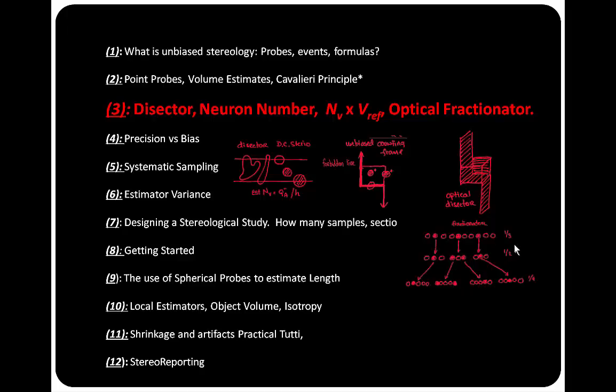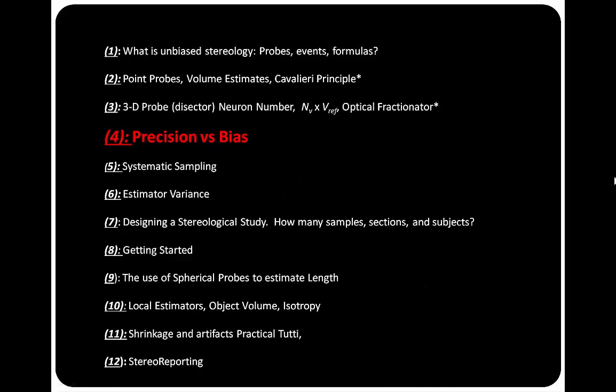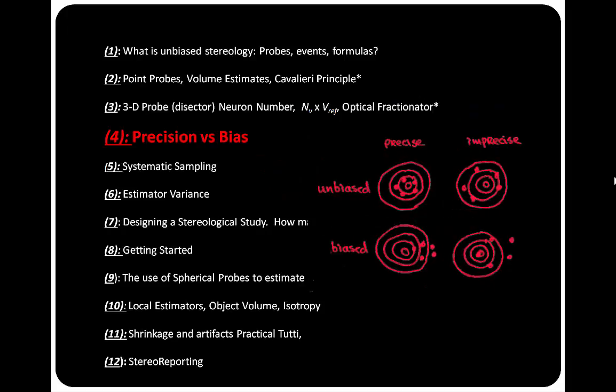In the fourth lecture, I will discuss the distinction between precision and bias. This is an important distinction. Think of precision as the margin of error on a population estimate, and bias as a systematic deviation away from the true value that cannot be corrected.